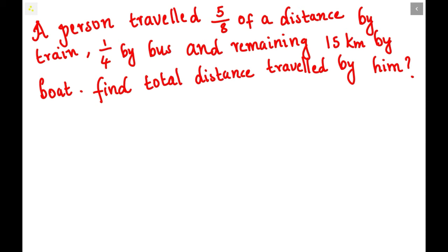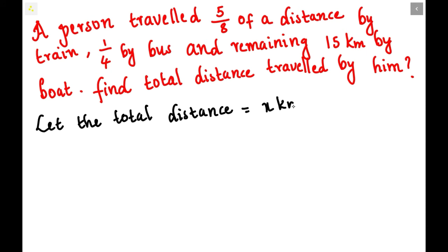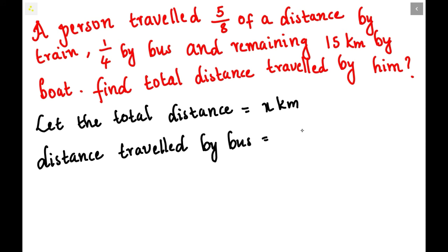We have to find the total distance traveled by train, bus, and boat. Let the total distance traveled by him be x kilometers. The distance traveled by bus will be 1/4 x, because he traveled some x kilometers total and we don't know how many kilometers he traveled by bus.